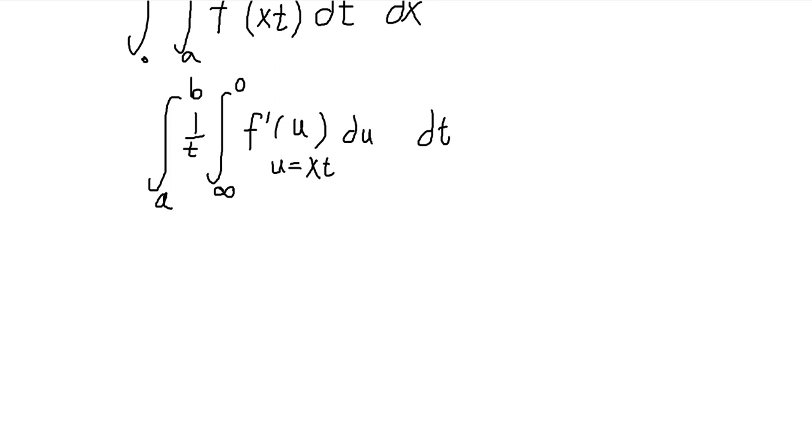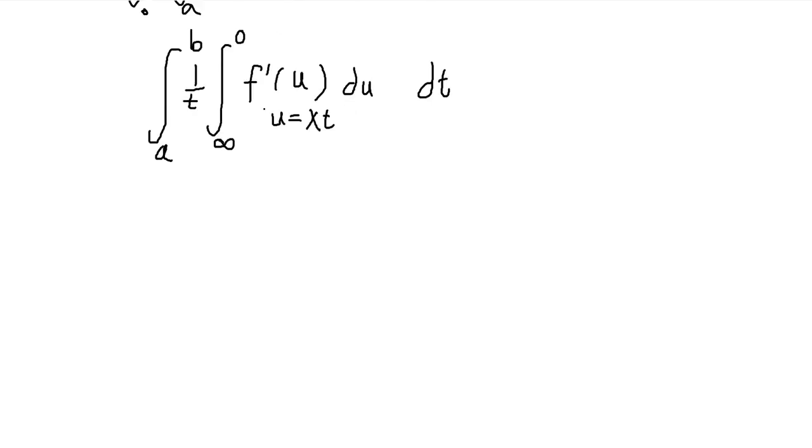Our bounds will stay the same, because if x is infinity and t is a constant, then u will also be infinity. And same for 0. If x is 0, then 0 times t will just be u. So this integrates just like that. And we're integrating f prime, that's the derivative. And I'll just get f of 0 minus f of infinity. And that's just a constant now. So I can bring it outside of the integral.